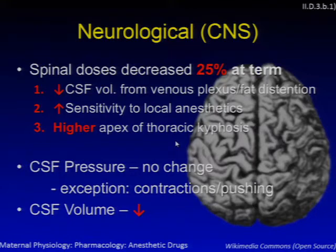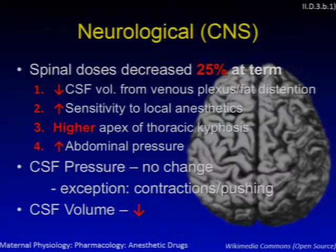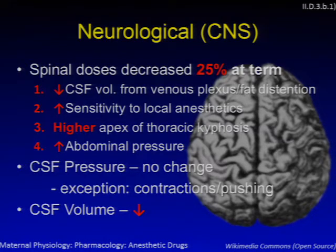There are neurologic changes of pregnancy as well. Spinal doses are decreased by 25% at term gestation for a number of reasons: CSF volume is decreased due to venous plexus and fat distension, there's increased sensitivity to local anesthetics, there's a higher apex of thoracic kyphosis meaning hyperbaric solutions pool at a higher level, and increased abdominal pressure results in inward displacement of intervertebral soft tissue. CSF pressure is essentially unchanged except during contractions and pushing, and CSF volume is decreased during pregnancy.